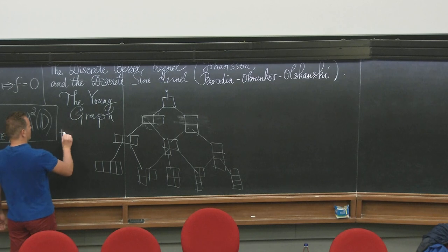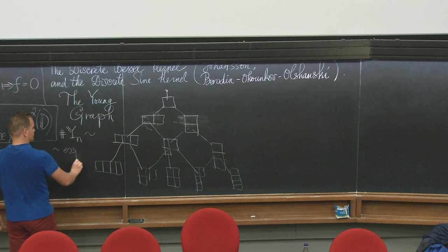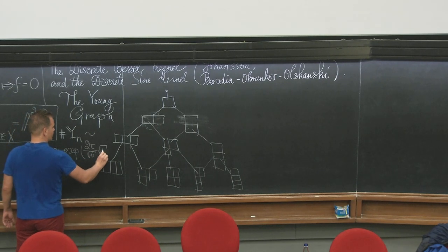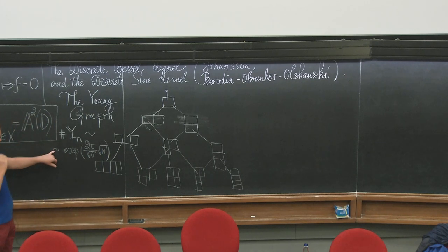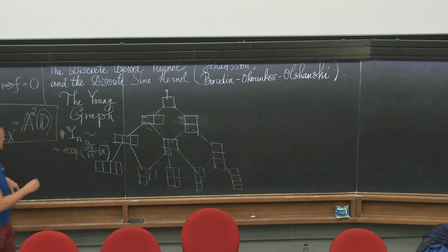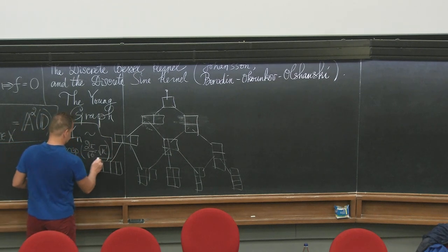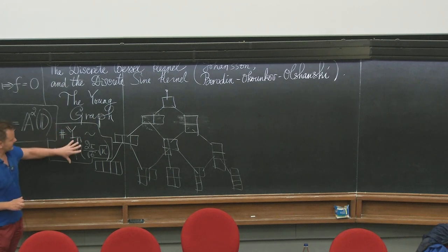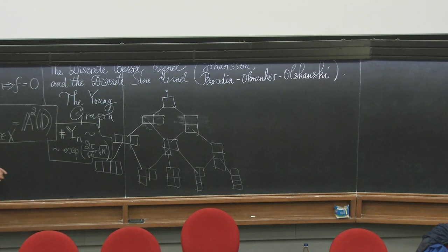We can recall the formula of Euler-Hardy-Ramanujan, that the number of diagrams in the Young graph grows roughly as exponential of 2π/√6 · √n. By the way, this only holds on a logarithmic scale — the Euler-Hardy-Ramanujan formula holds on a multiplicative scale, but the formula I will write later only holds on a logarithmic scale.